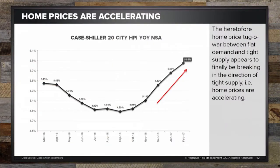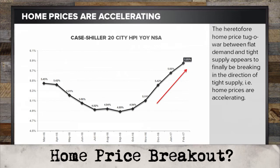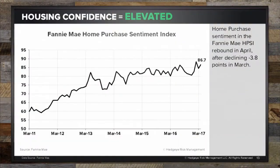On slide 11, home prices are the release valve for that tight inventory dynamic. The year-over-year rate of change in home prices, using the Case-Shiller 20-City benchmark, is accelerating. On the sentiment side, the Fannie Mae Home Purchase Sentiment Index has been steadily climbing — it raced up immediately after the election, pulled back a bit, and is now climbing again, which seems favorable.